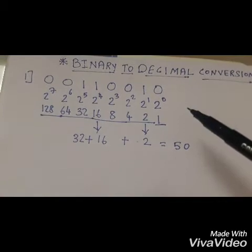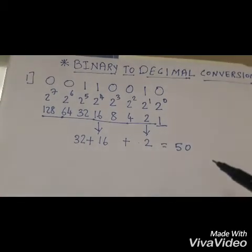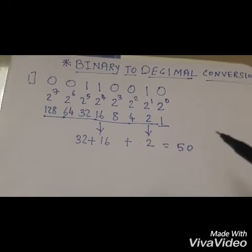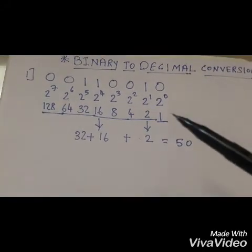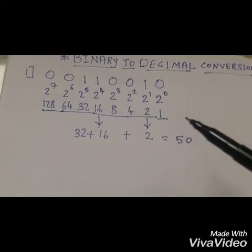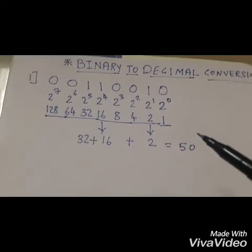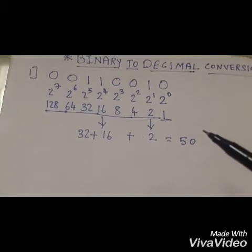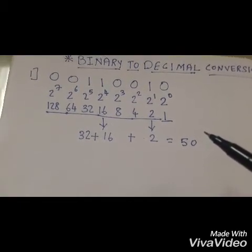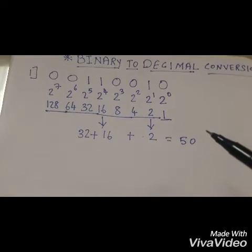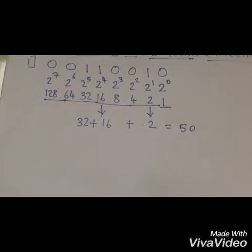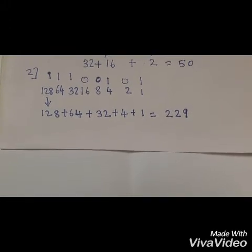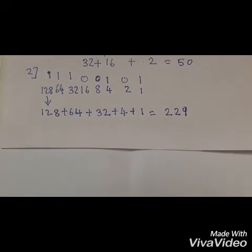The overall addition of these numbers is 50, so we have easily converted this binary number into decimal form. Our decimal number is 50. With the help of this example, it is easy to convert binary to decimal numbers. We will now look at another example so the idea becomes more clear and you can easily solve these at home.